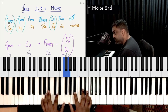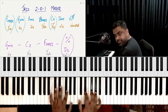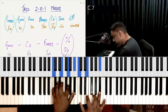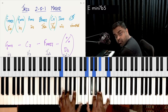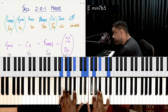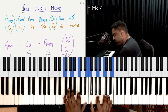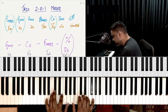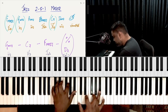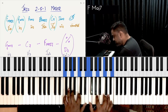So if you take the F major scale, the seventh chords are: F major seventh, G minor seventh, A minor seventh, B flat major seventh, C dominant seventh, D minor seventh, E minor seven flat five — or the half diminished, which has the phi symbol — and then F major seventh again. These are your F major scale seventh chords.